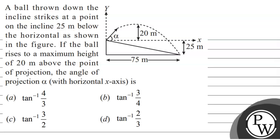Let's read this question. A ball thrown down the incline strikes at a point on the incline 25 meters below the horizontal, as shown in the figure. If the ball rises to a maximum height of 20 meters above the point of projection, the angle of projection alpha with horizontal x-axis is — options are tan⁻¹(4/3), tan⁻¹(3/4), tan⁻¹(3/2), tan⁻¹(2/3). We have to choose the correct option.